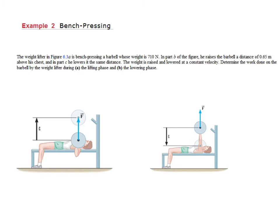So in this example, the weightlifter is bench-pressing a barbell whose weight is 710 newtons, and he raises the barbell a distance of 0.65 meters above his chest. In the second picture, it's the same weight, and it's the same distance, but the direction is a little bit different.